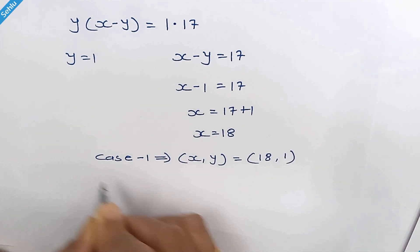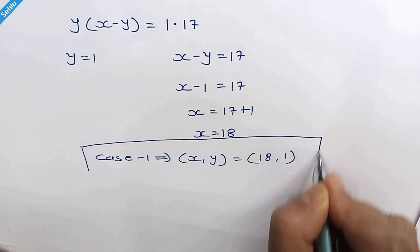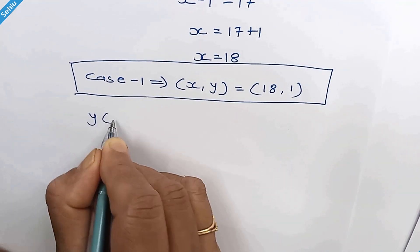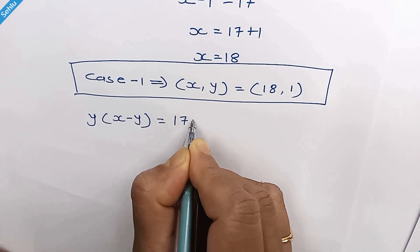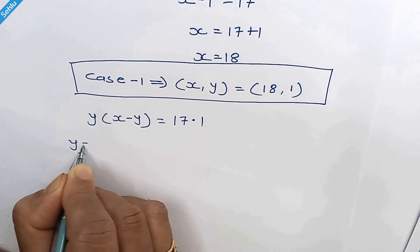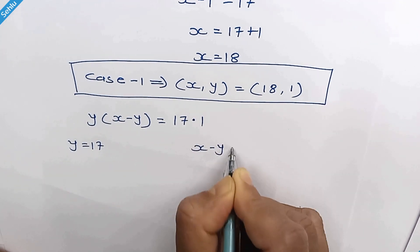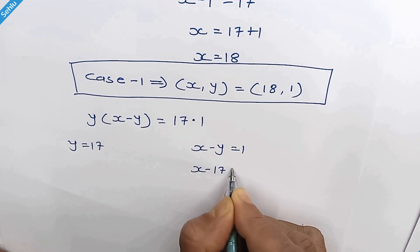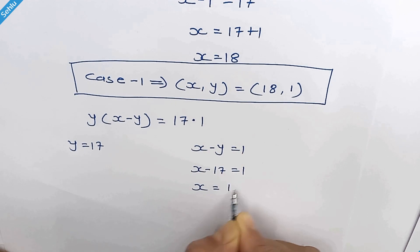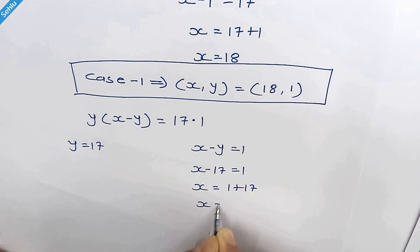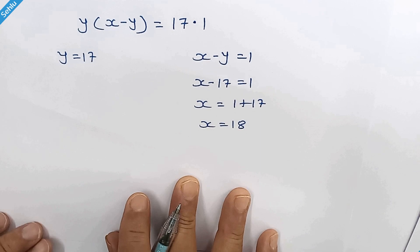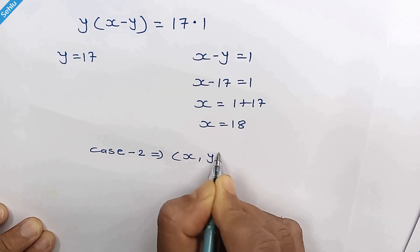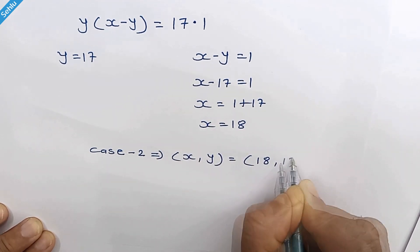For Case 2: y equals 17 and x minus y equals 1. Substituting gives x minus 17 equals 1, so x equals 18. Therefore for Case 2, x is 18 and y is 17.